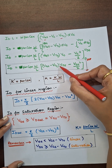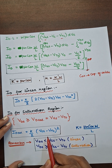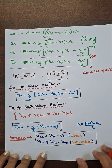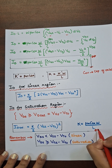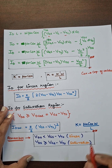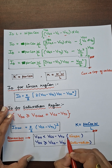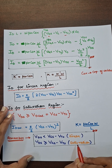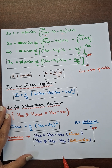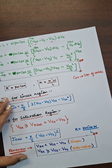After replacing VDS with VGS minus VTO, we get the saturation region ID formula. Remember: in the linear region, VDS must be less than VGS minus VTO, and in the saturation region, VDS must be greater than or equal to VGS minus VTO. These conditions are very important for both numerical and derivation purposes.